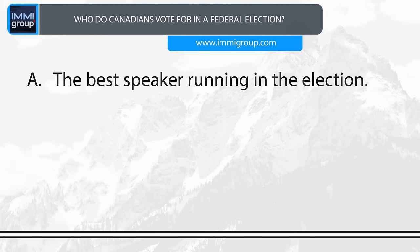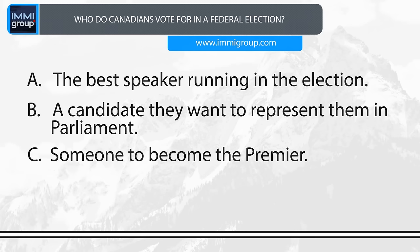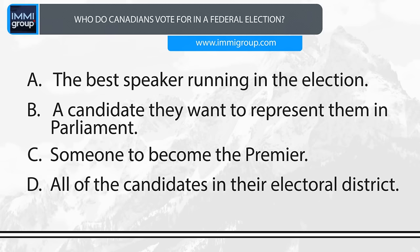Who do Canadians vote for in a federal election? A. The best speaker running in the election. B. A candidate they want to represent them in Parliament. C. Someone to become the Premier. D. All of the candidates in their electoral district. Answer: A candidate they want to represent them in Parliament.